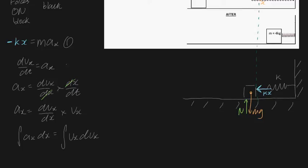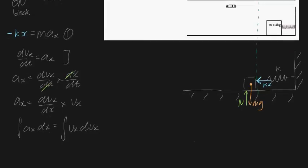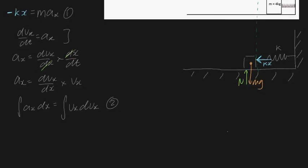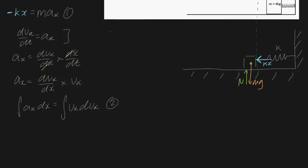Now we have two equations and we can substitute a_x into the integral. From equation one, we can write a_x is equal to minus k/m times x — that's just rearranging the first equation. So let's substitute equation one into equation two.